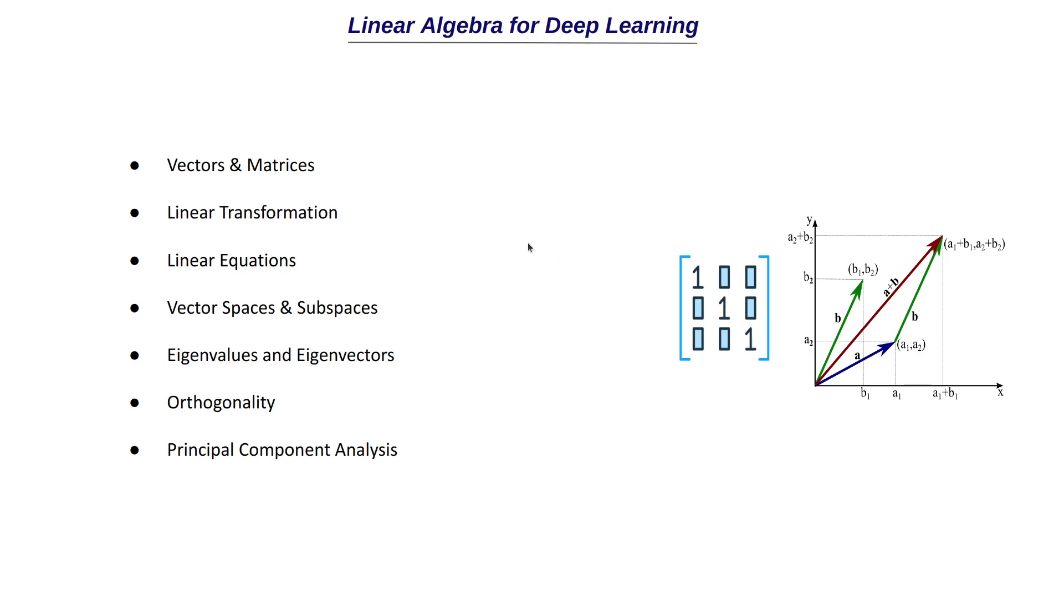So first we will start with vectors and matrices. Vectors and matrices are a crucial aspect in deep learning because all the data that we feed to the neural network are represented as vectors and matrices. If you think about an image, an image is nothing but a three-dimensional matrix that has red, green and blue intensity values in the pixels.